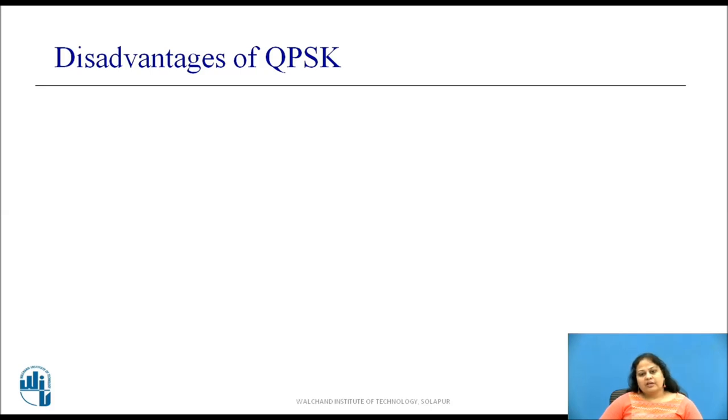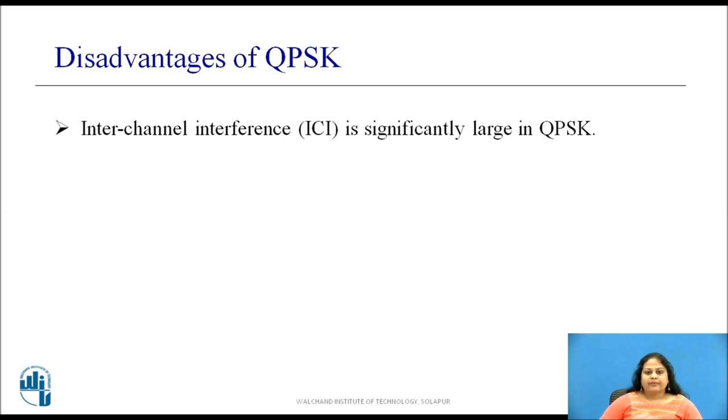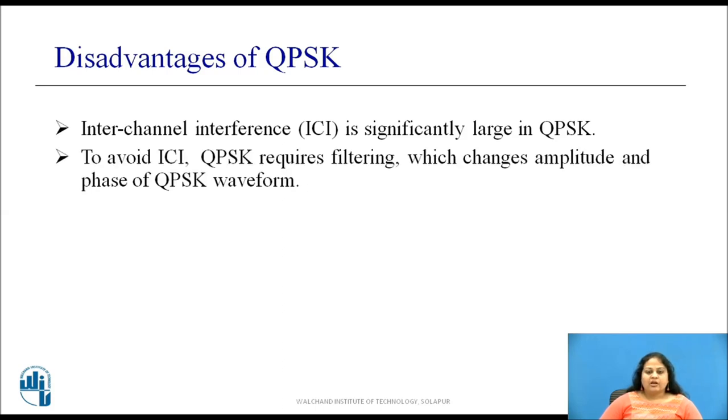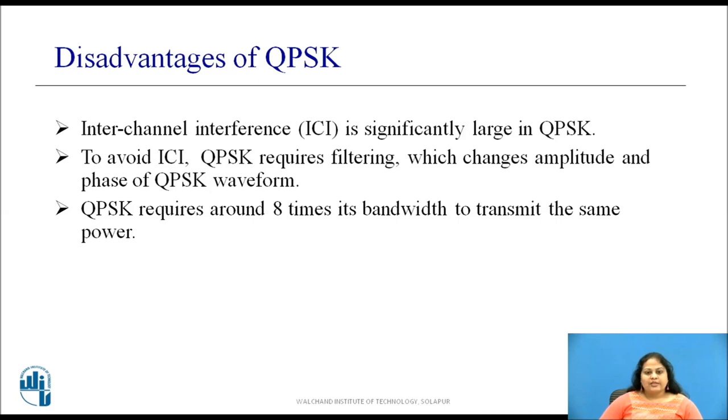Along with the advantages, QPSK signals also have some disadvantages. The inter-channel interference is significantly large in QPSK. To avoid this, QPSK uses filtering. But due to this, the amplitude and phase of QPSK waveform changes. QPSK requires around 8 times its bandwidth to transmit the same power.